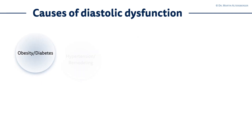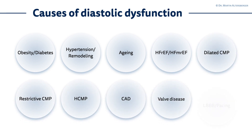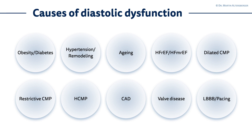To summarize this first lecture, let's look at possible causes of diastolic dysfunction. It's not only hypertensive heart disease — though hypertension and cardiac remodeling are important factors — but also obesity, diabetes, and the aging population. Heart failure with reduced ejection fraction and heart failure with mildly reduced ejection fraction also have diastolic dysfunction. Patients with dilated cardiomyopathy, hypertrophic cardiomyopathy, and restrictive cardiomyopathy may have diastolic dysfunction. Additionally, patients with coronary artery disease, valvular heart disease, and left bundle branch block or pacing can show signs and symptoms of diastolic dysfunction.